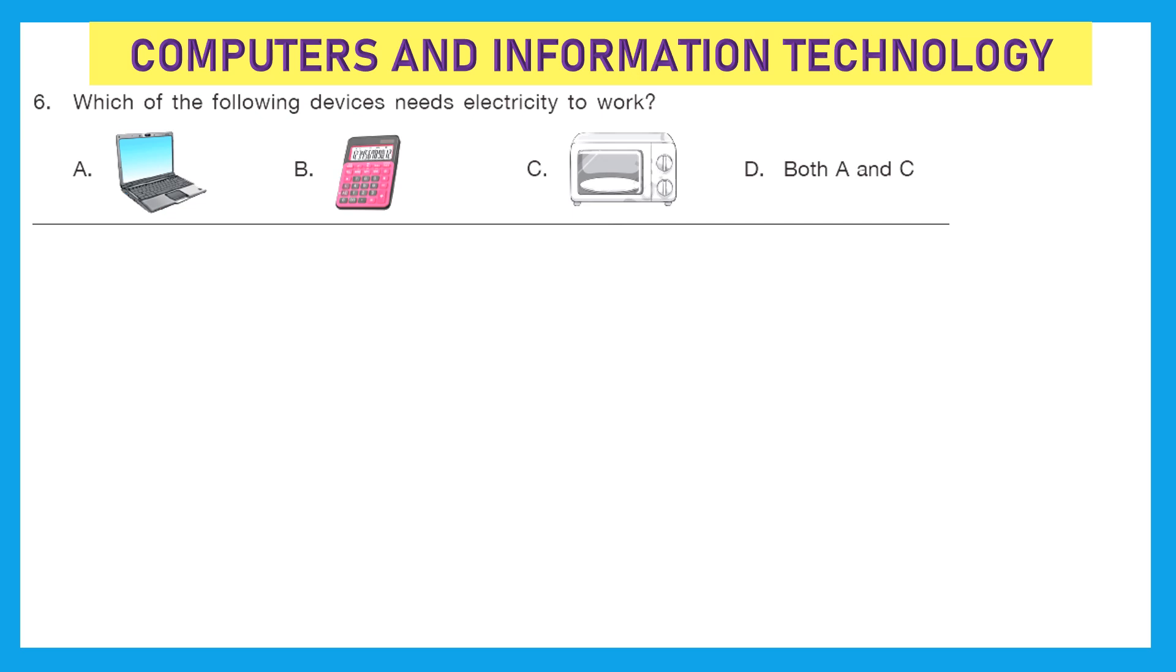Moving to the second section that is computers and information technology. Question 6: which of the following devices needs electricity to work? So the first one is laptop, B is calculator, C is microwave and D is both A and B. Now here the right answer should be D because both A and B needs electricity to work whereas calculator runs on cell or battery.